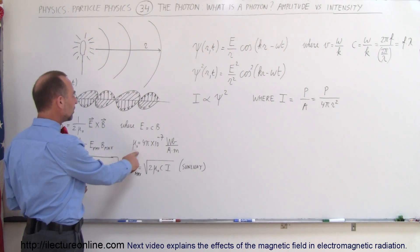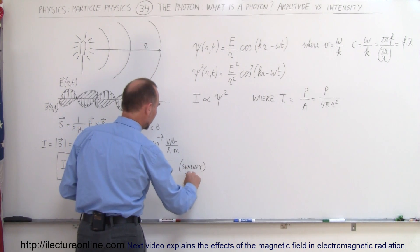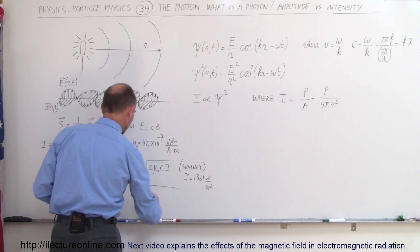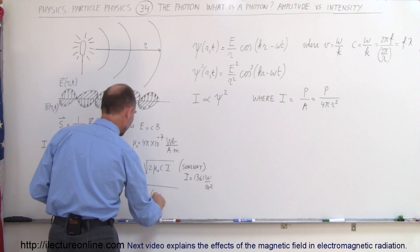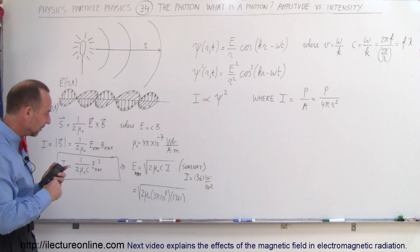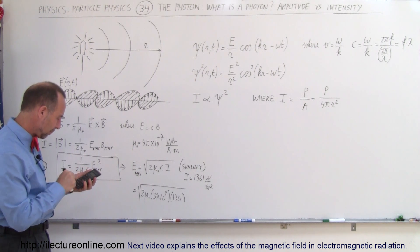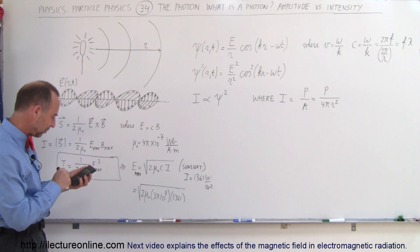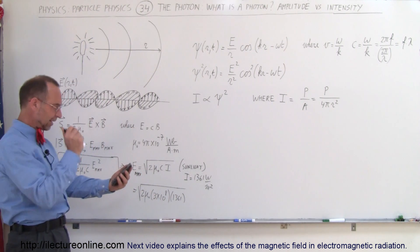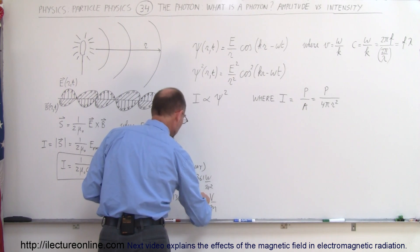Plugging in the values: μ₀ is 4π × 10⁻⁷ Webers per amp·meter, c is the speed of light 3 × 10⁸ m/s, and for sunlight I equals 1361 watts per square meter. Taking the square root of 2·μ₀·c·I — that's 3×10⁸ times 2 times π times 4×10⁻⁷ times 1361 — we get E_max equal to 1013 volts per meter, or equivalently newtons per coulomb.